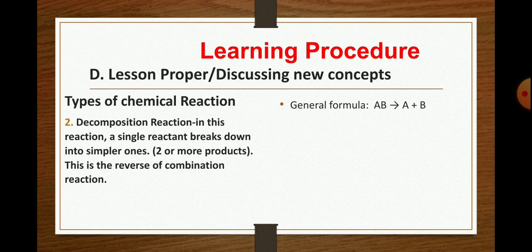With this general formula, one single product to form two or more products. Best example is two moles of mercury oxide solid decomposes to form two moles of mercury solid and oxygen gas. The mercury solid oxide broken down into two different substances and it does follow the decomposition reaction.